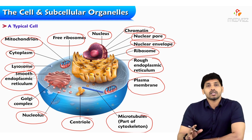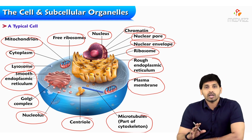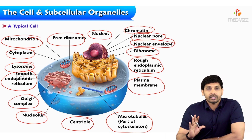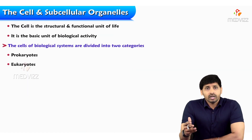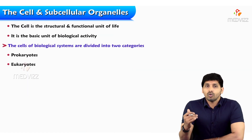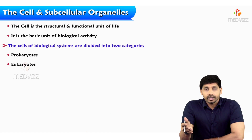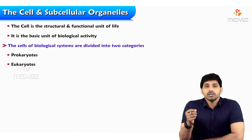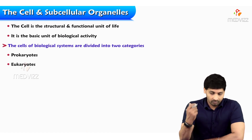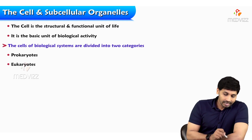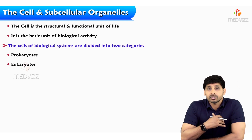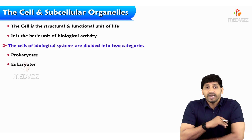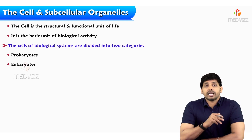All these subcellular organelles are present inside the eukaryotic cell and each subcellular organelle has its own functions, which are mandatory for functioning of the cell. The cell is a structural and functional unit of life — it is the basic unit of biological activity.